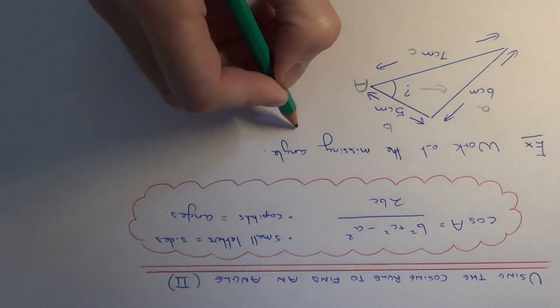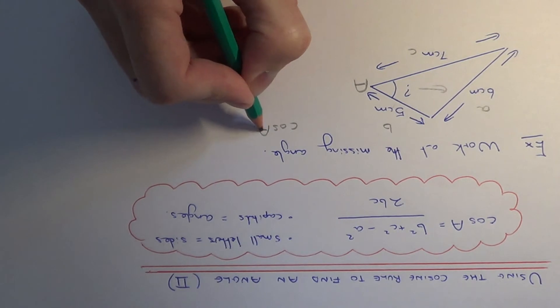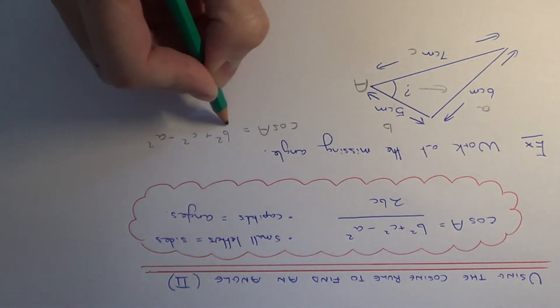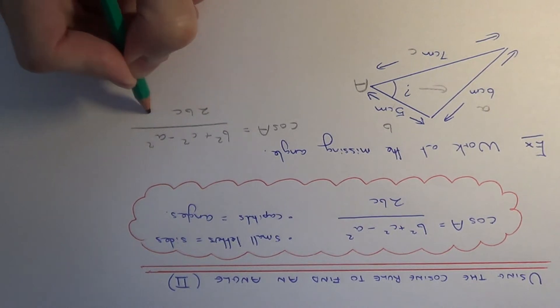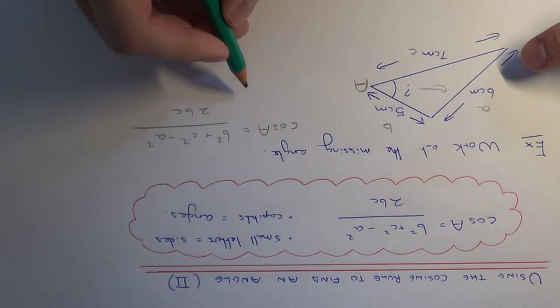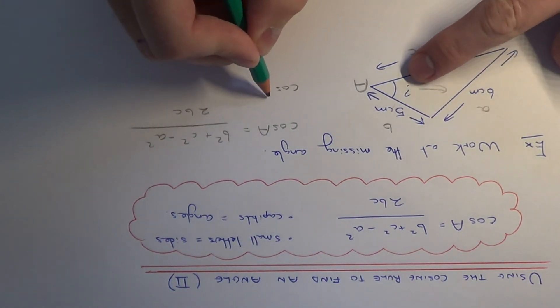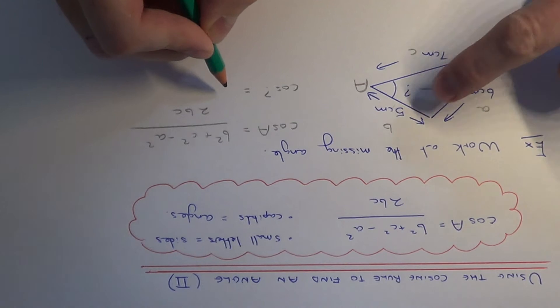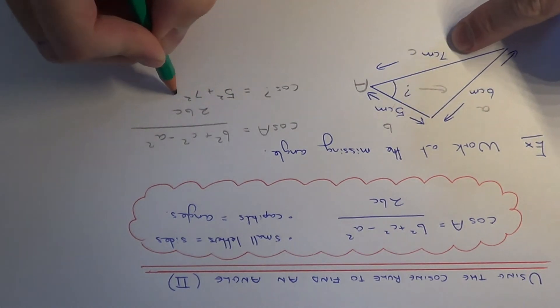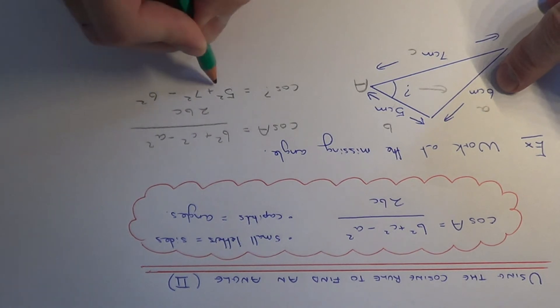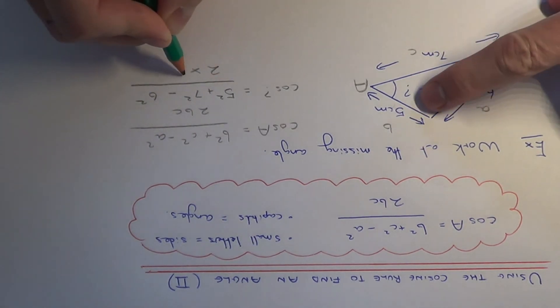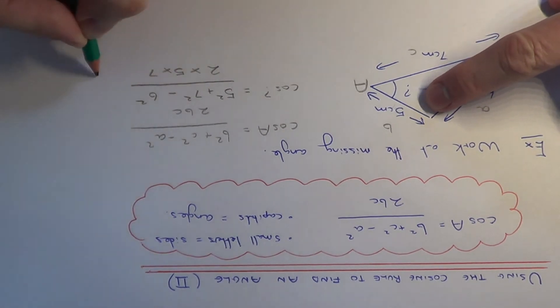So let's just copy our cosine rule formula down again. We just need to substitute the side lengths into this formula. So cos question mark equals 5 squared plus 7 squared minus 6 squared all divided by 2 times 5 times 7.